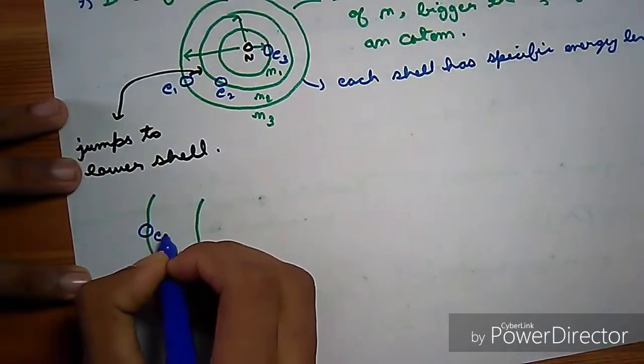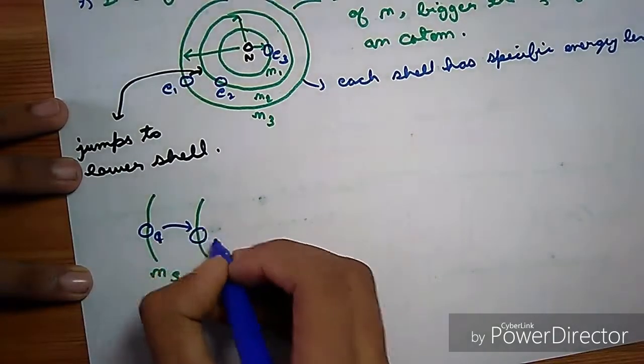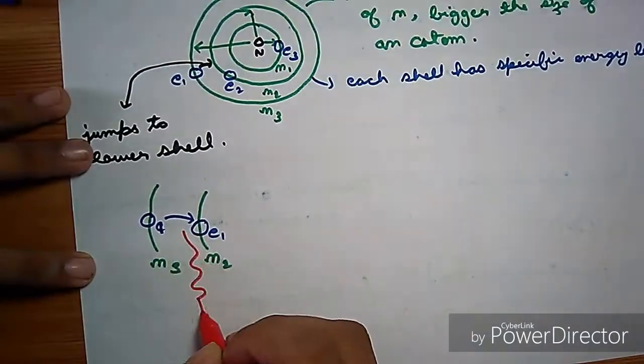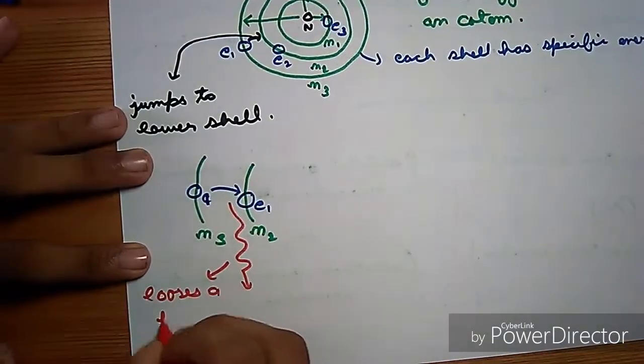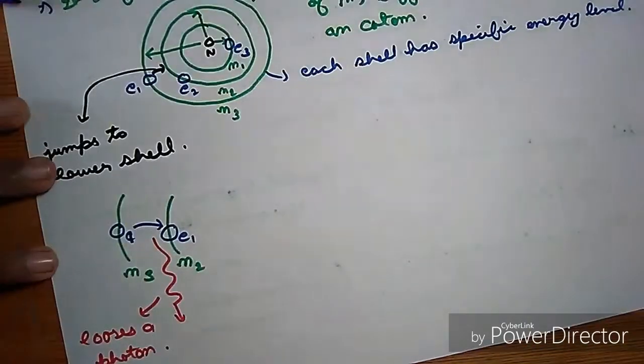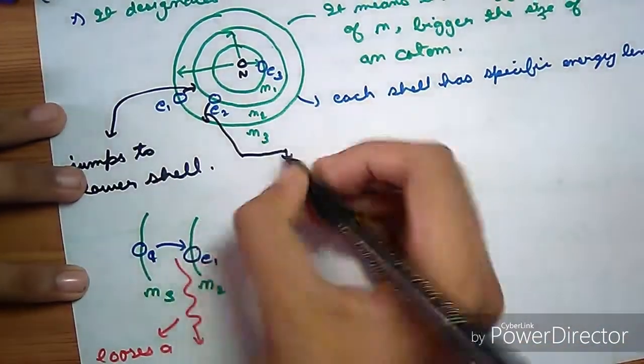Take N3 and N2, and an electron from N3 jumps to N2. It releases a photon particle.